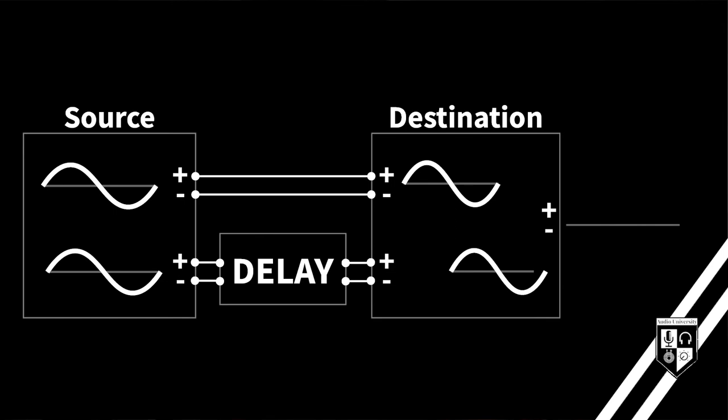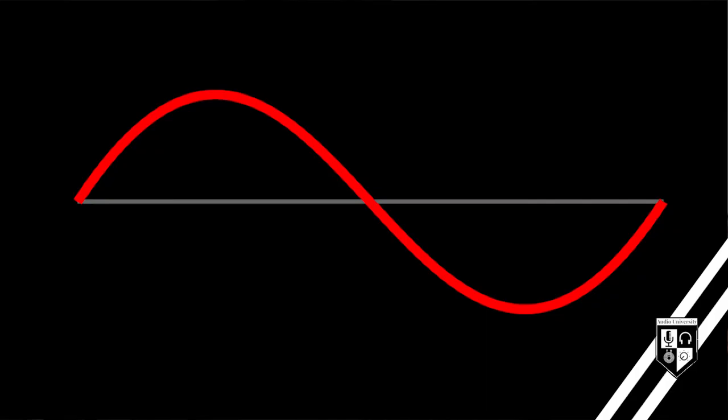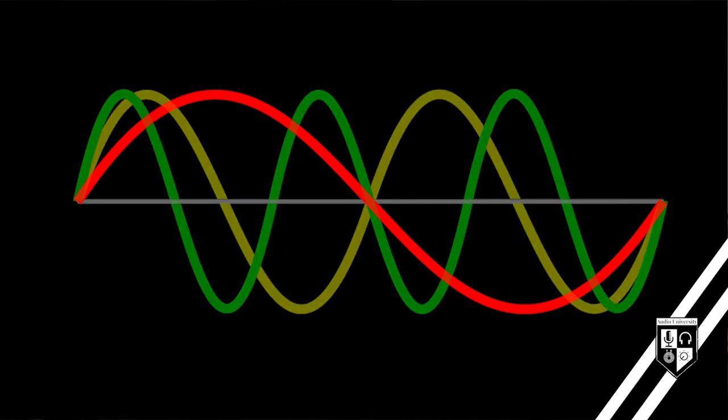A phase shift doesn't always result in a perfect summation or a perfect cancellation. Up until this point, our examples have contained only one frequency. However, most audio signals contain many frequencies. In fact, this highlights one of the most practical differences between polarity and phase.